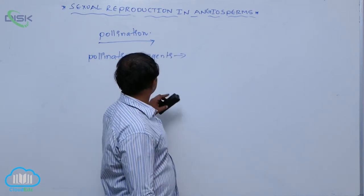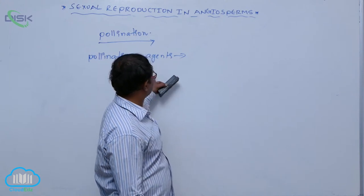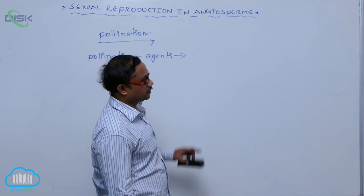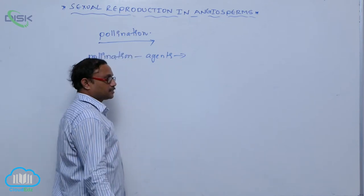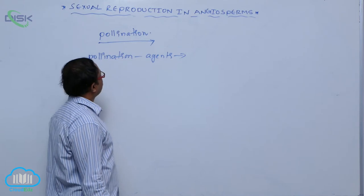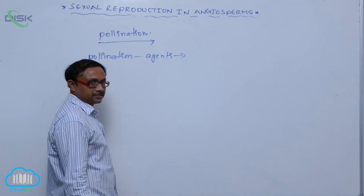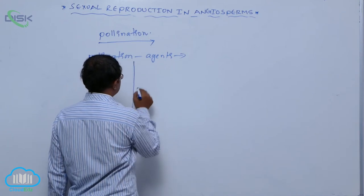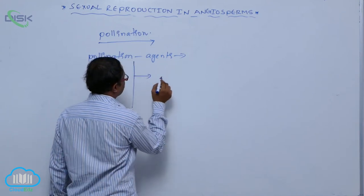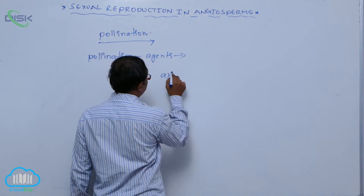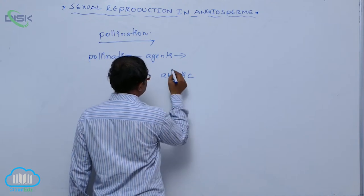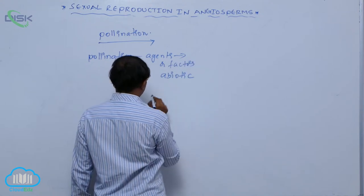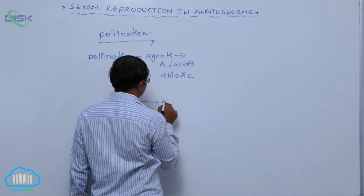For the transfer of pollen grains to reach the stigma of the pistil, some mediums or agents help. These are known as pollinating agents. These pollinating agents are of two types: the first is abiotic agents, and the second is biotic agents.